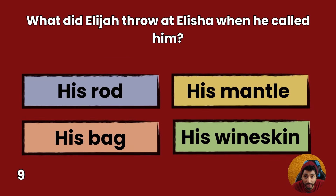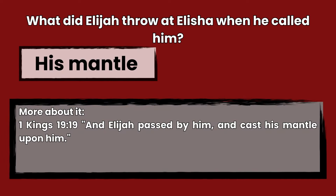Question 9: What did Elijah throw at Elisha when he called him? His rod, his mantle, his bag, or his wineskin? Answer: His mantle. 1 Kings 19:19 — And Elijah passed by him and cast his mantle upon him.